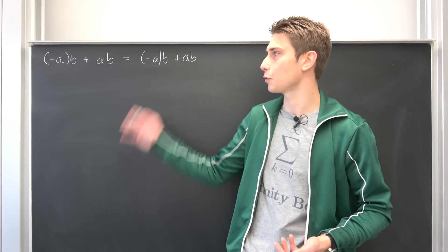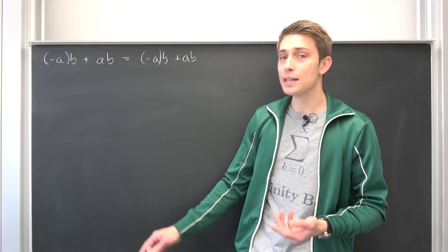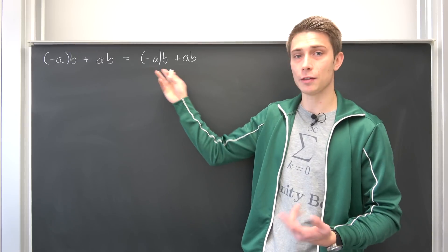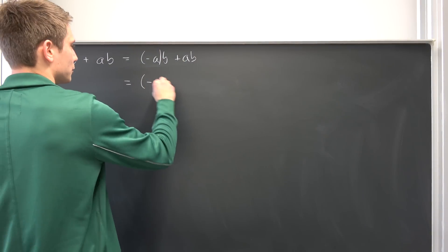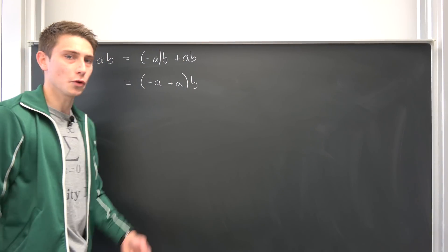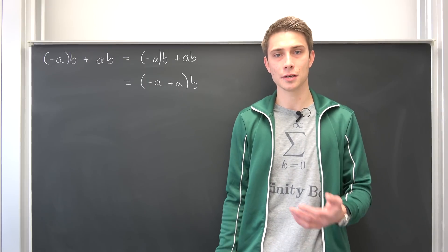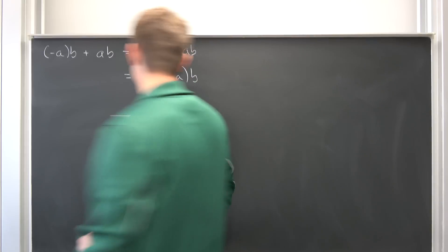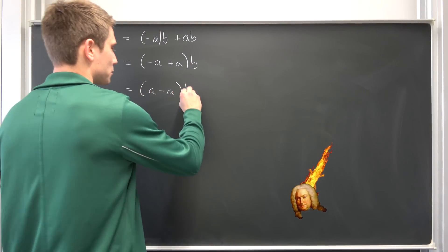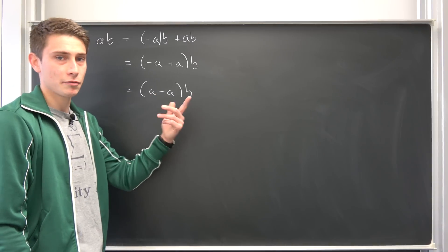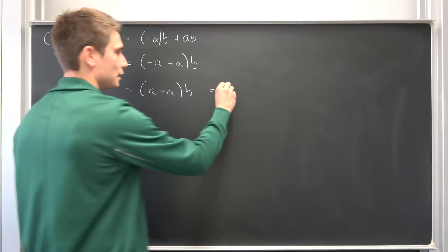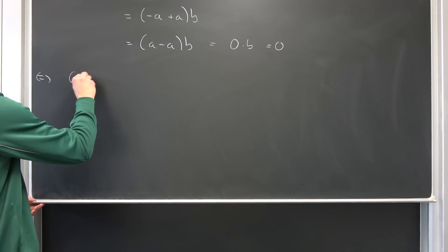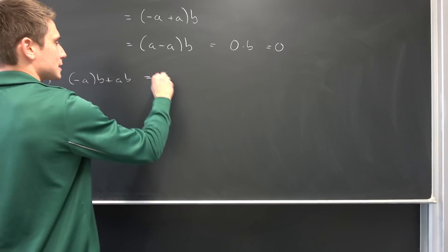I would like to start off with a true statement, and we are going to manipulate the right-hand side. We have the right distributivity, so why not factor out the B? We end up with negative A plus A, times B. But our group under addition is abelian, meaning all the elements commute. So negative A plus A is the same as A minus A, times B. But this is something minus something resulting in the identity element — so zero times B. We have proven that this is nothing but zero. So right now we end up with: negative A times B plus A times B equals zero.